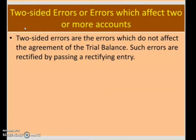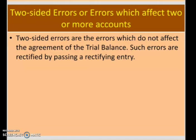That was all about one-sided errors. Now let us discuss two-sided errors, or errors which affect two or more accounts. Two-sided errors do not affect the agreement of the trial balance. Such errors are rectified by passing a rectifying journal entry. We have to follow certain steps. Listen carefully to how to make the rectifying entry.